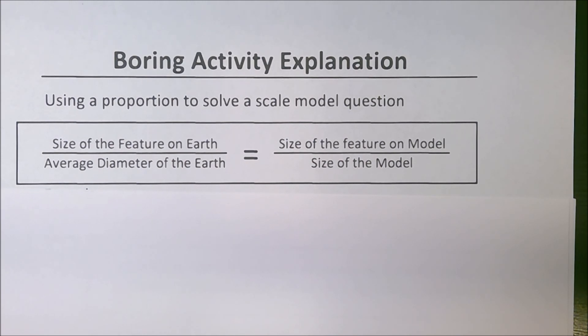Models are incredibly important, and when you're creating a scale model where a physical model is representing an actual object, you need to use a proportion to figure out the correct relative size. If we're trying to make a model, we're going to compare the size of the feature on Earth to the size of the Earth, and then the size of the feature on the model to the size of the model.